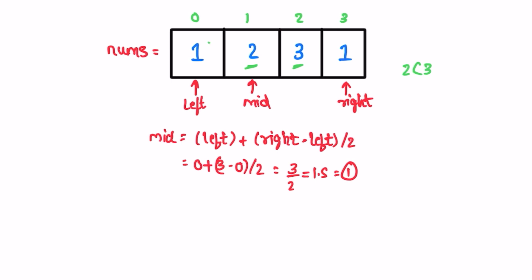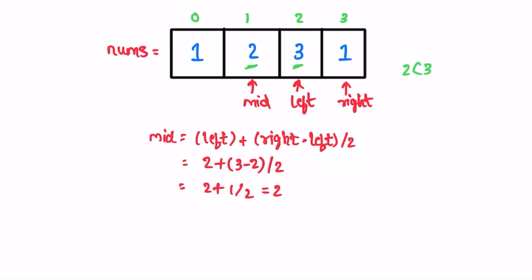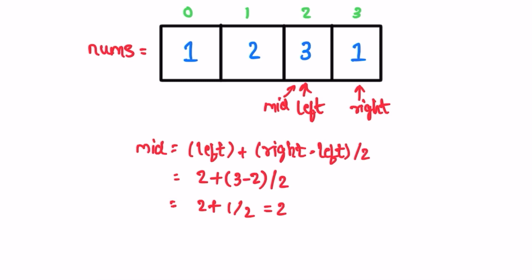Since the element at mid + 1 is greater, we'll never find our answer in the left part of the array. So we reduce the search space by moving left to mid + 1. Now we recalculate mid: with left and right both converging, mid becomes 2.